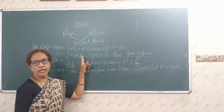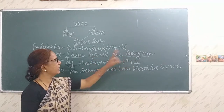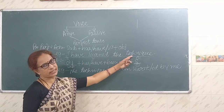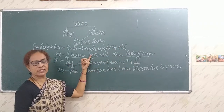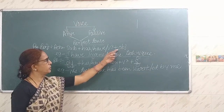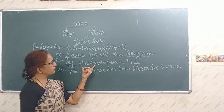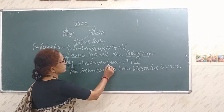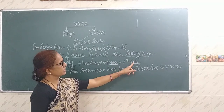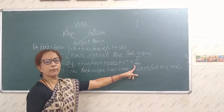Let's see how it is. 'I have learnt the technique.' So 'I' is subject, 'have learnt' is the verb, and 'the technique' is the object. Now we have to change the sentence into passive. So see, what is the passive structure? The object becomes the subject here, then has or have as per the subject, then B-E-E-N, plus V3, and the subject becomes the object.